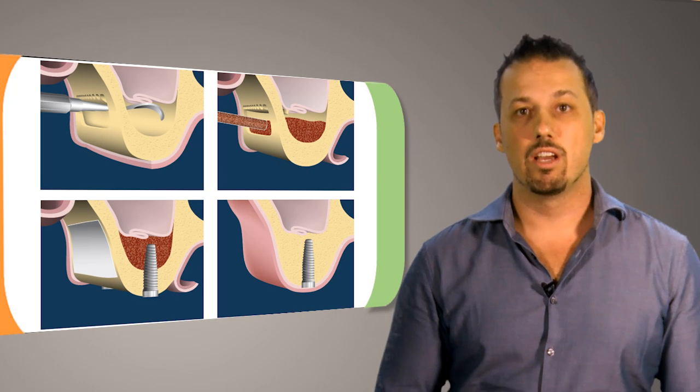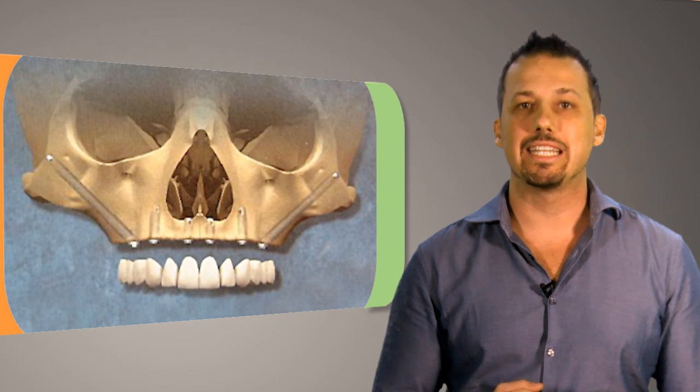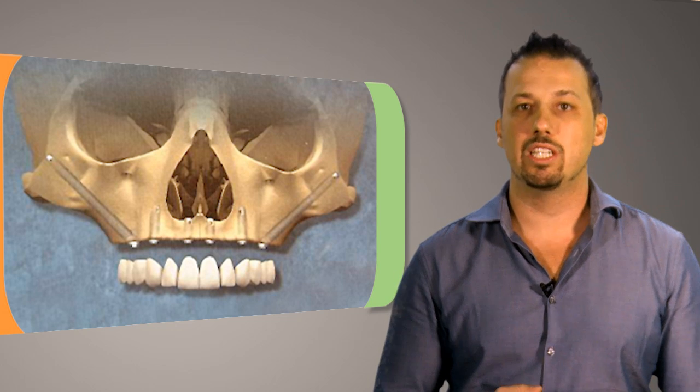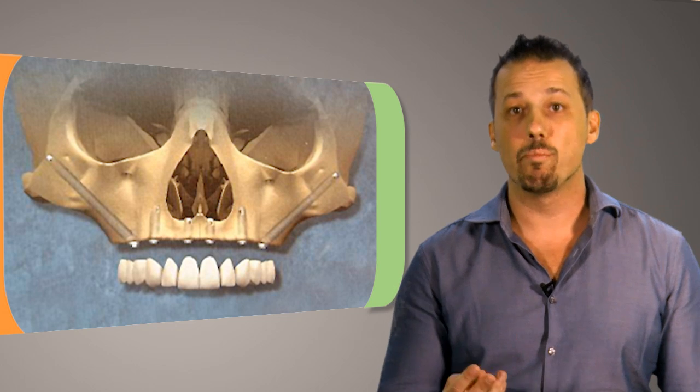An alternative for highly resorbed upper jaws is what is known as zygomaticus implants. But whilst they're cheaper, they do have certain potential problems that must be taken into account before embarking on this process that is complex to undo.